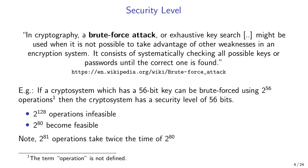Note that 2^81 operations take twice the time compared to 2^80, because the difference is in the exponent. Therefore, when we compare 2^128 with 2^256, we have to understand that 2^256 is not twice as secure as 2^128 — it is 2^128 times more secure. By adding just one bit, we double the computation effort required to brute force the key.